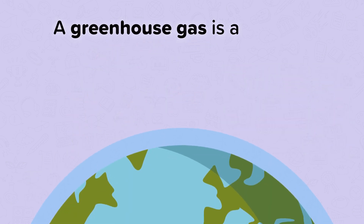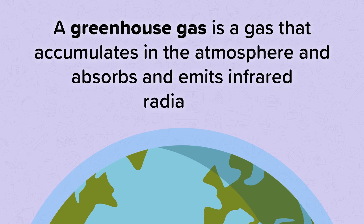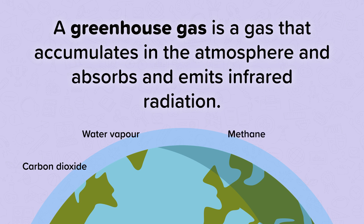A greenhouse gas is a gas that accumulates in the atmosphere and absorbs and emits infrared radiation. As well as carbon dioxide, the other greenhouse gases you need to be aware of are water vapour, methane and nitrogen oxides.